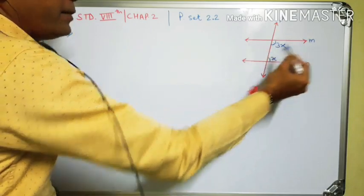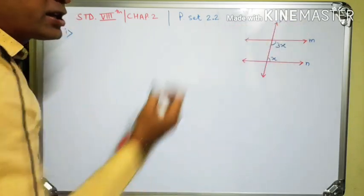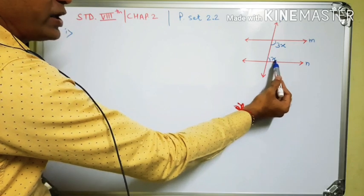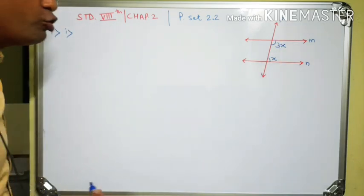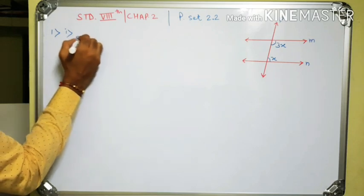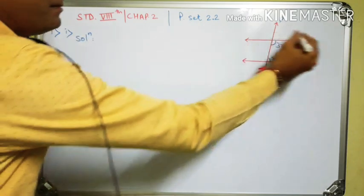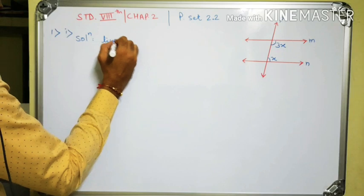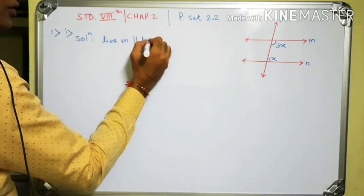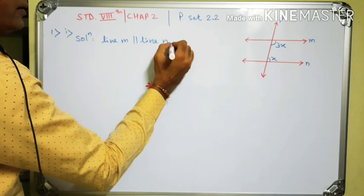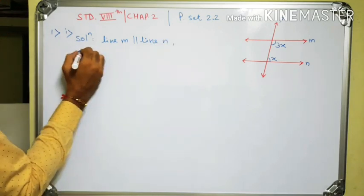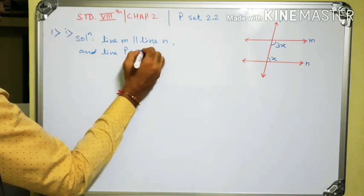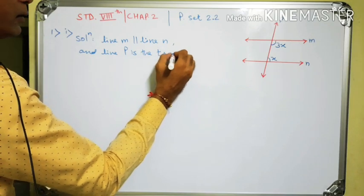In this figure, line M is parallel to line N, line P is the transversal, the measure of one angle is 3x and the measure of the other angle is x. We have to find the value of x. Solution: line M is parallel to line N — this is given — and line P is the transversal.